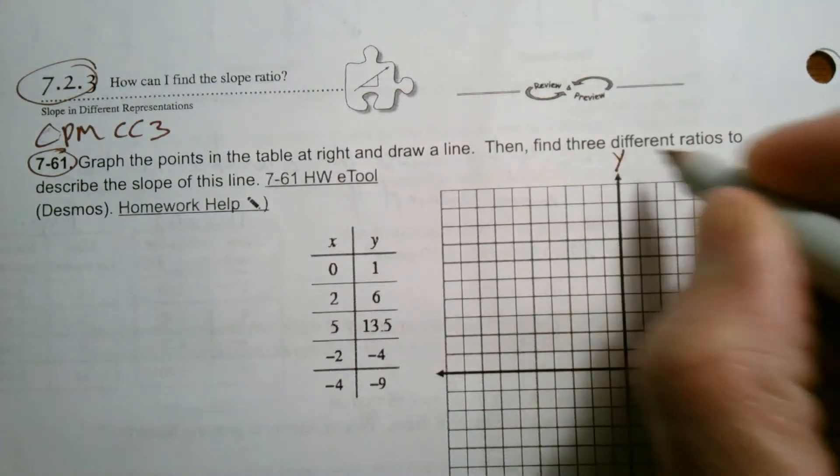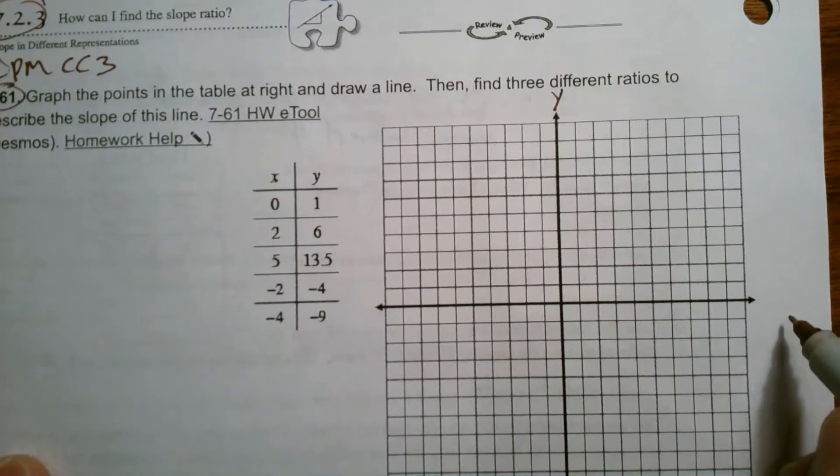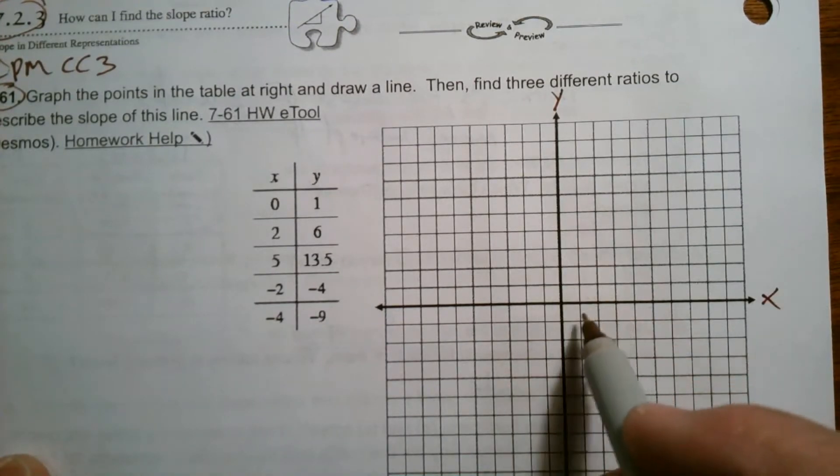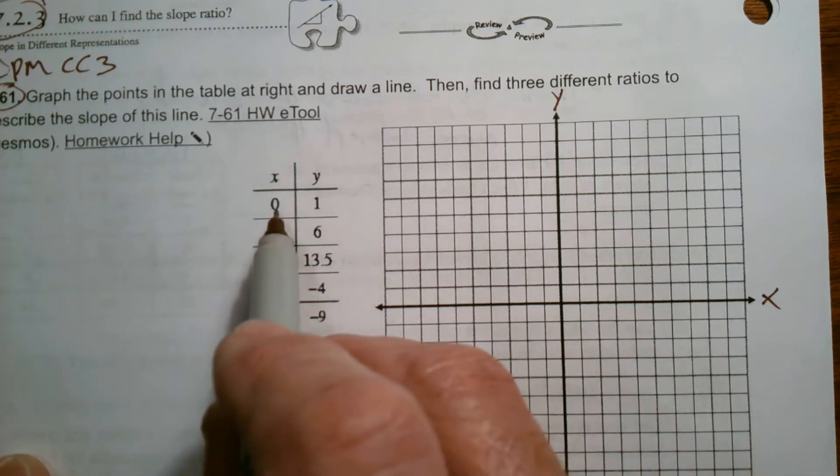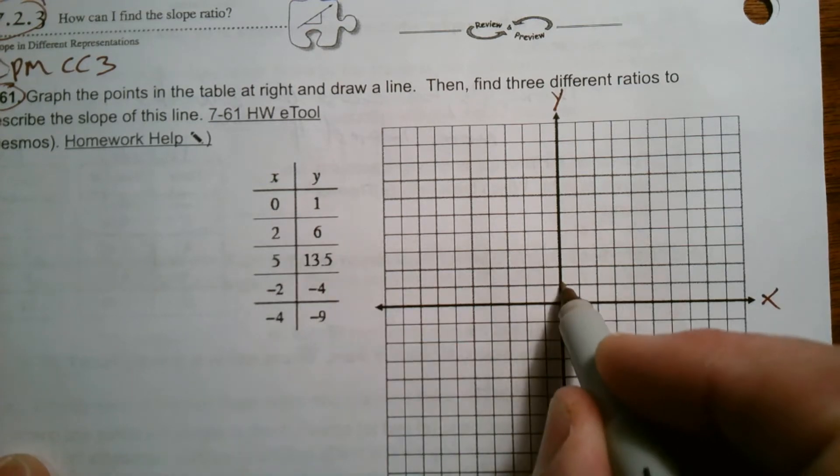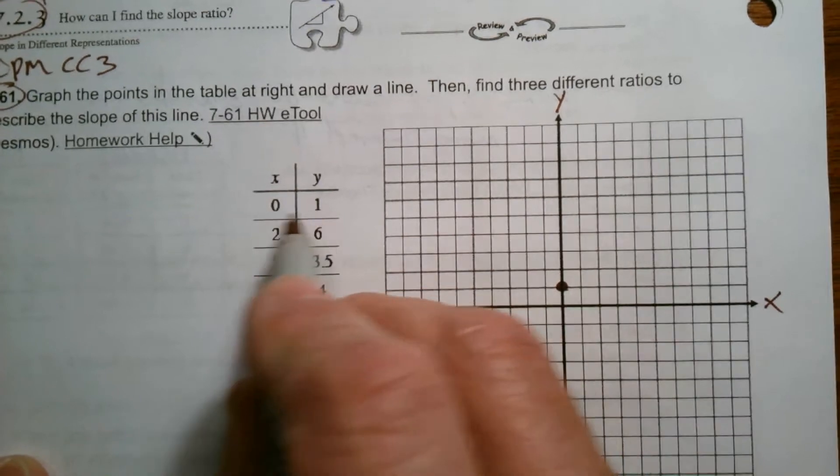Remember, this is my Y axis. This is my X axis, and I'm just going to use a scaling of one. So everything is by ones. So zero, one. So X is zero, Y is one. That's that point right there.